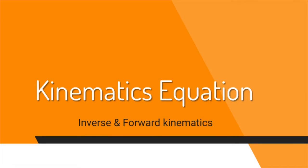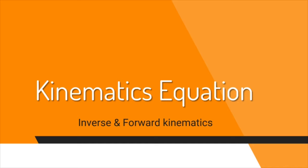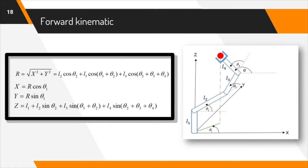วันนี้จะพูดถึง Kinematic Equation ในการควบคุมแขนกลให้เคลื่อนไปยังตำแหน่งที่ต้องการ จะมีความจำเป็นในการหาค่าตำแหน่งและค่ามุมของแต่ละจอยต์ของแขนกล ซึ่งจะมีสองส่วน ได้แก่ Forward Kinematics และ Inverse Kinematics. (Today we will discuss the Kinematic Equation. To control the robotic arm to reach the desired position, it is necessary to find the position values and joint angles. There are two parts: Forward Kinematics and Inverse Kinematics.)